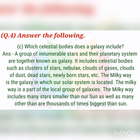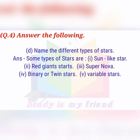This is the answer for question number four C. Write it down in your notebook. Question number four D: name the different types of stars. There are five types of stars: sun-like stars, red giant stars, supernova, twin stars, and dwarf stars. Write all of these down in your notebook.